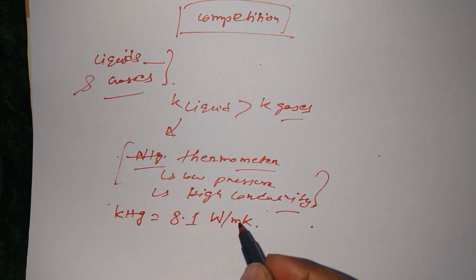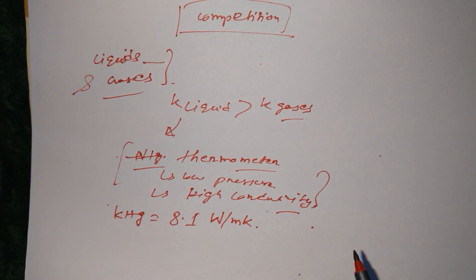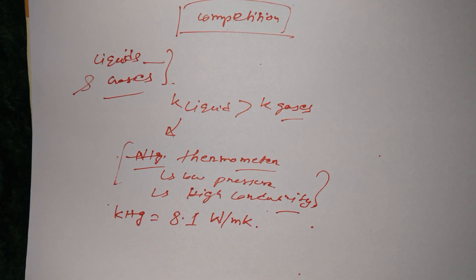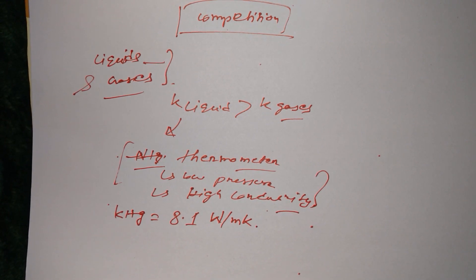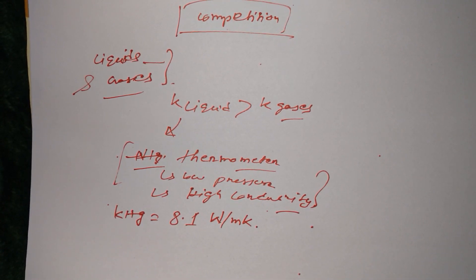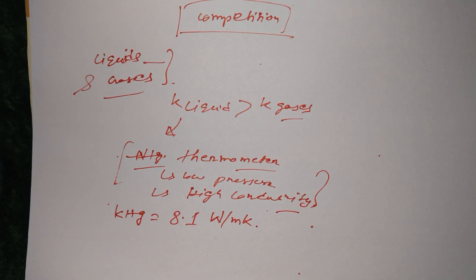Mercury has the highest thermal conductivity among liquids. Gases have very less thermal conductivity. Liquids have more thermal conductivity than gases because in liquids the molecules are attached together directly, but in gases there is a little distance between them. That is why in gases, heat transfer takes place because high-temperature high-velocity molecules collide with low-temperature low-velocity molecules, transferring heat from higher to lower temperature.